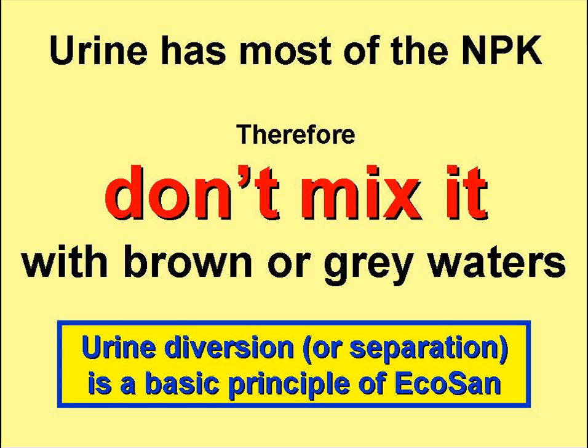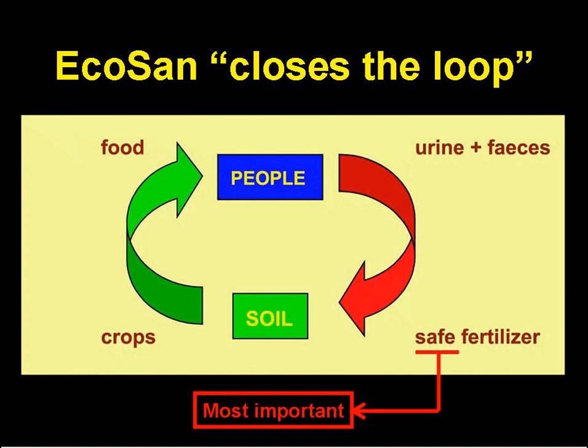So urine has most of the NPK we excrete, and we shouldn't mix it with brown or grey waters. This is a central tenet of Ecosan, although some Ecosan proponents are not quite this orthodox. Thus, for many Ecosan proponents, urine diversion — sometimes called urine separation — is a fundamental principle of Ecosan. Ecosan closes the loop between our excreta and our food. It's simply direct reuse of the nutrients in our excreta, by making sure that the excreted pathogens are dead, so the process is safe.